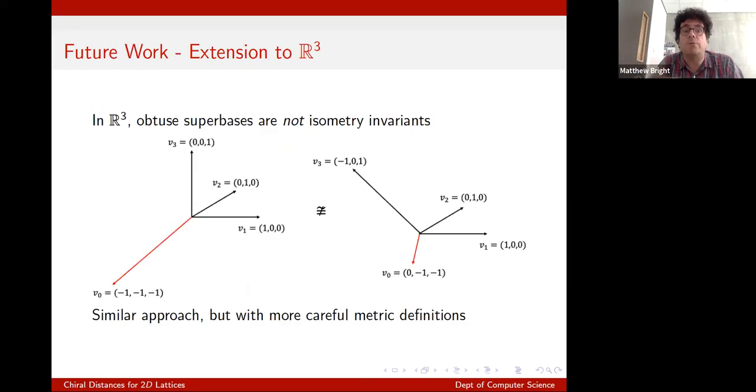And again, we obviously want to extend this to space in three dimensions. But we have this barrier that obtuse super bases are not quite isometry invariants, but you can get isometry invariants out of them, and you can get a similar sort of space. It's a six dimensional space, but that's going to take a bit more work, and the definitions of the metrics are going to need to be more careful and more complicated.